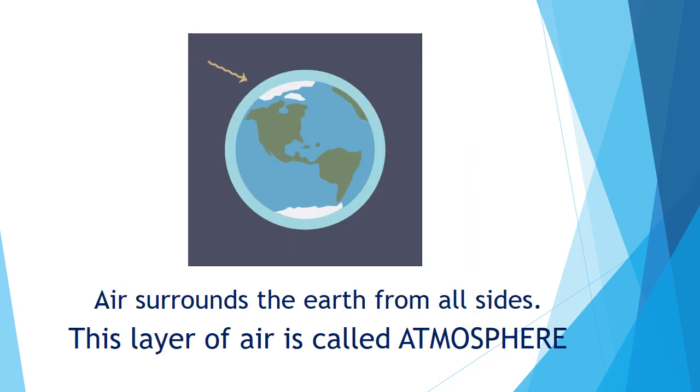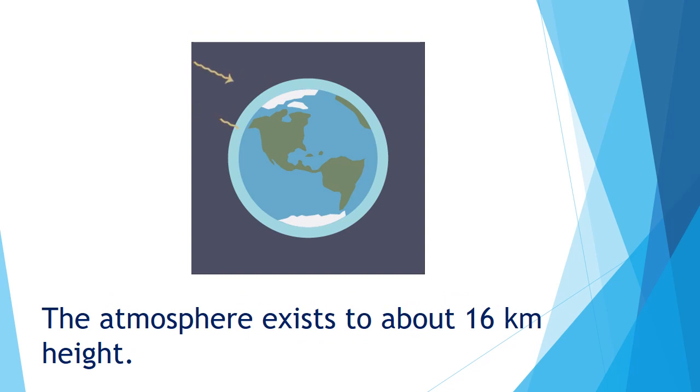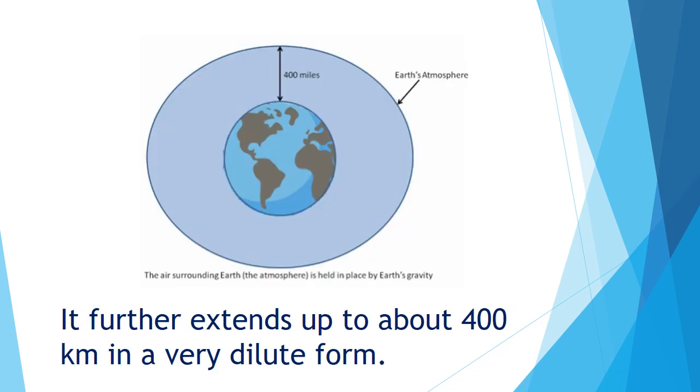Air surrounds the earth from all sides. This layer of air is called atmosphere. The atmosphere exists to about 16 km height. It further extends up to 400 km in a very dilute form.